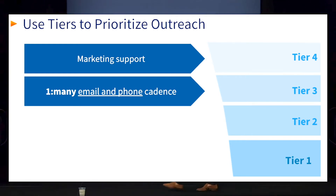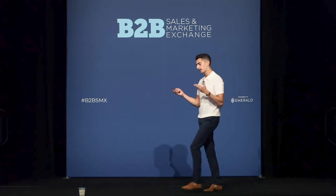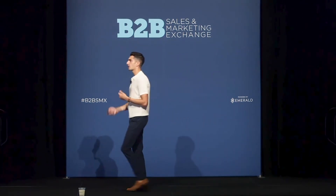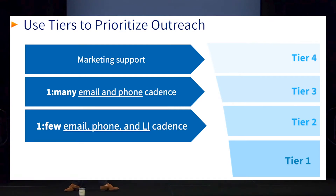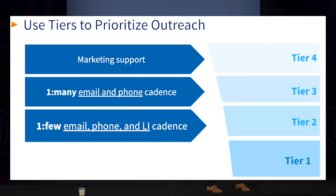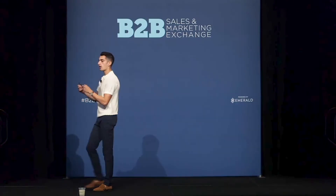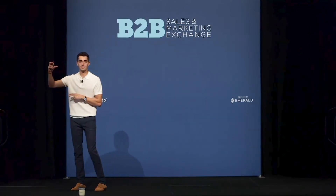That cadence is going to consist of email and phone. As they're showing engagement — or maybe we've chatted in the past — these become our tier two accounts. This is now where the AE, myself, would start to get involved in the tier two and tier one accounts. We're putting them in a one-to-few cadence, meaning there are areas that are templatized but also a lot of areas for personalization.